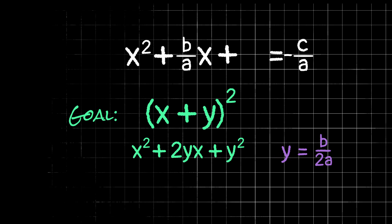Now, how does this help us? Well, we notice this third term is y squared. In our original equation, we don't have a third term, but we could add one. So this is telling us to add y squared, but we know y equals b over 2a. So in other words, we want to add b over 2a quantity squared.